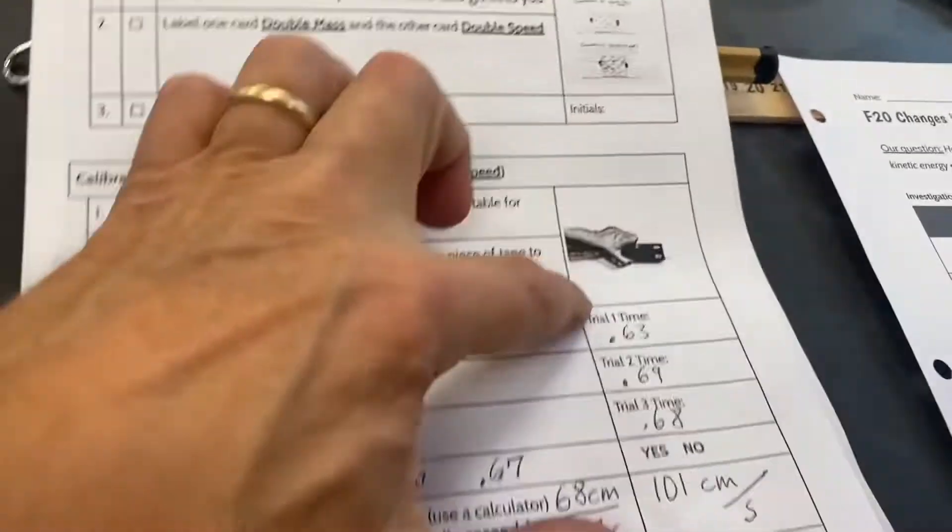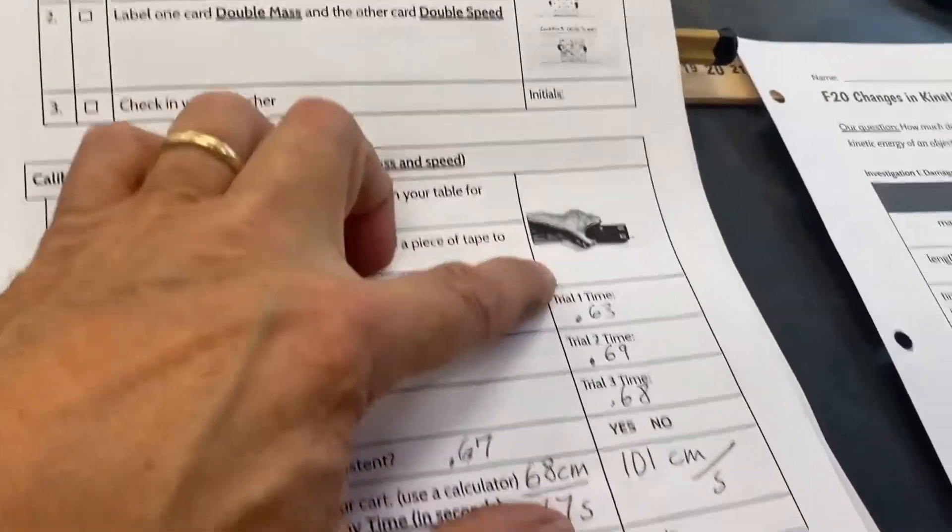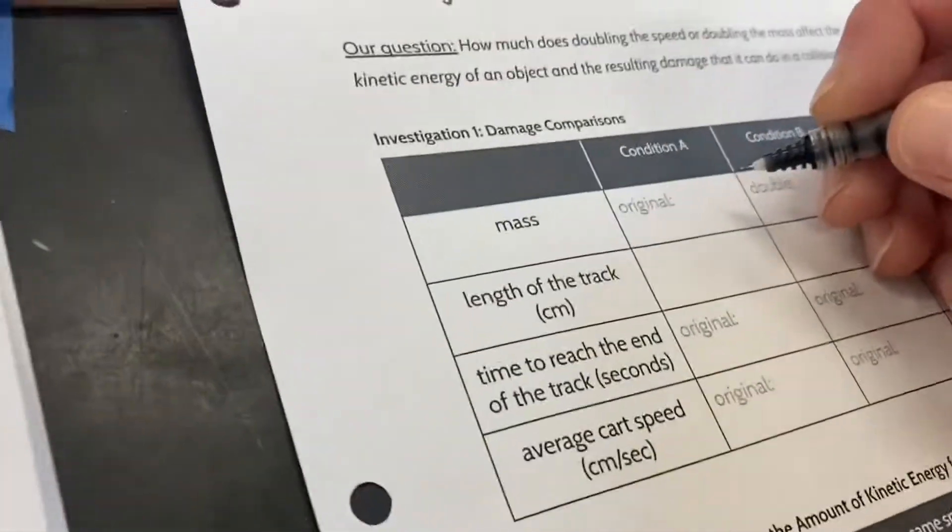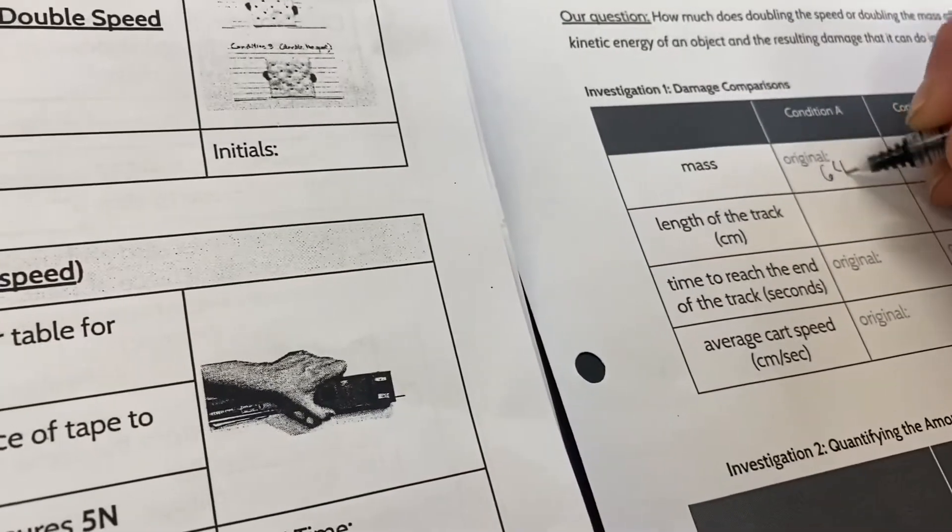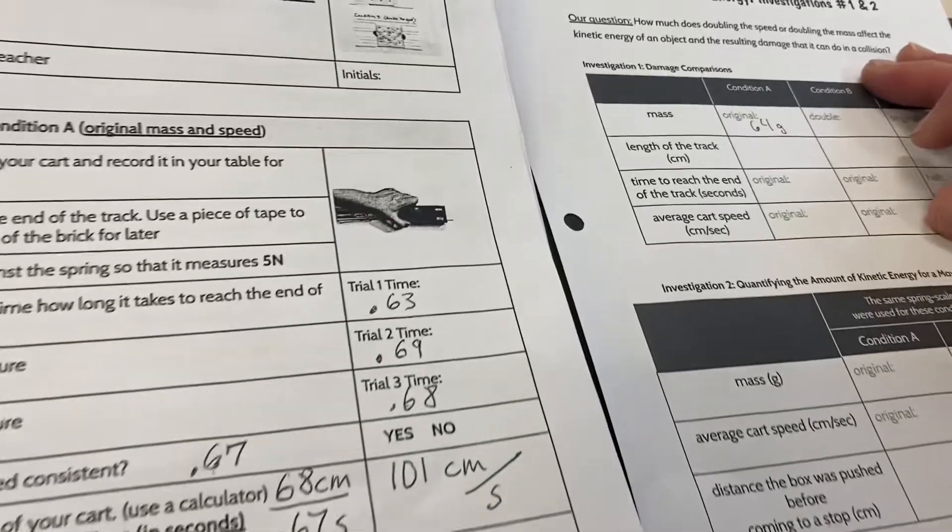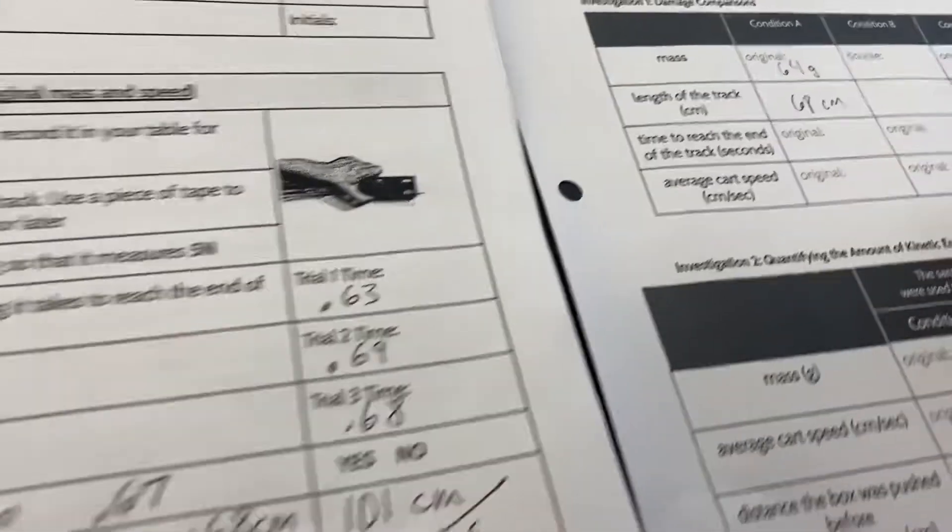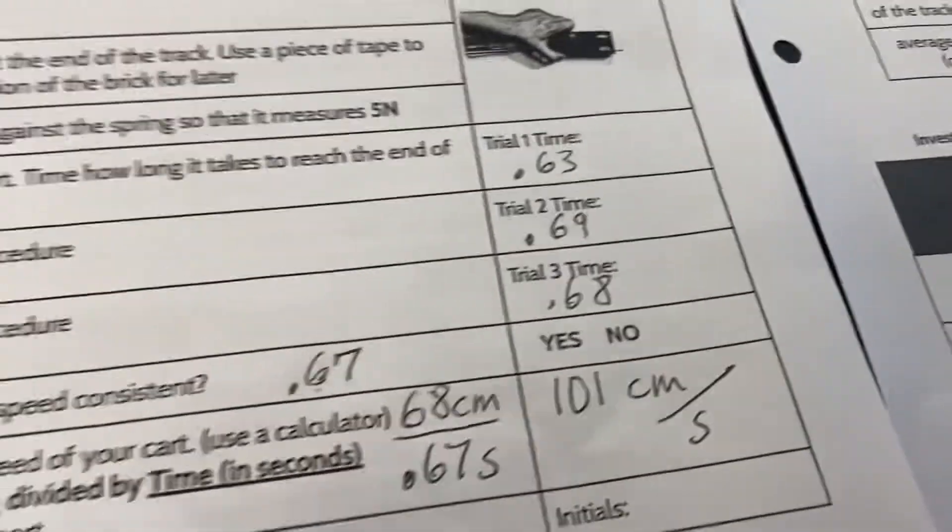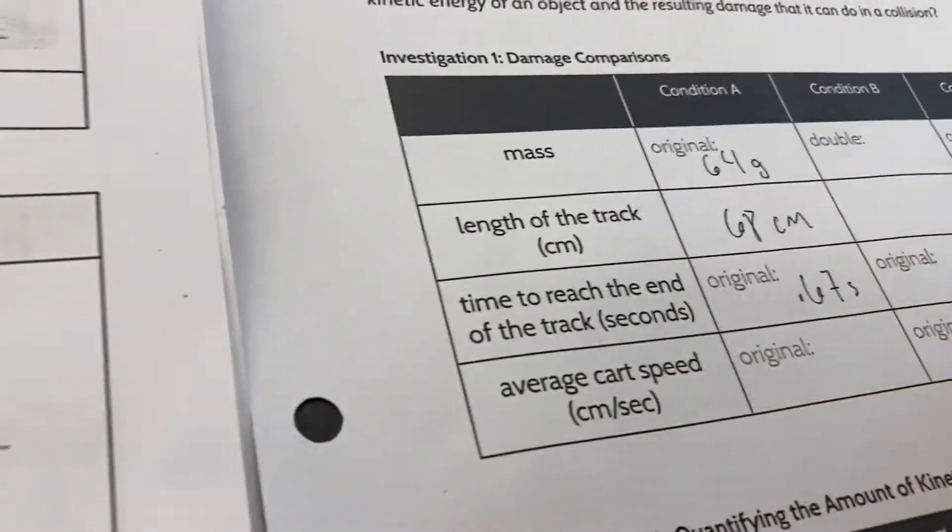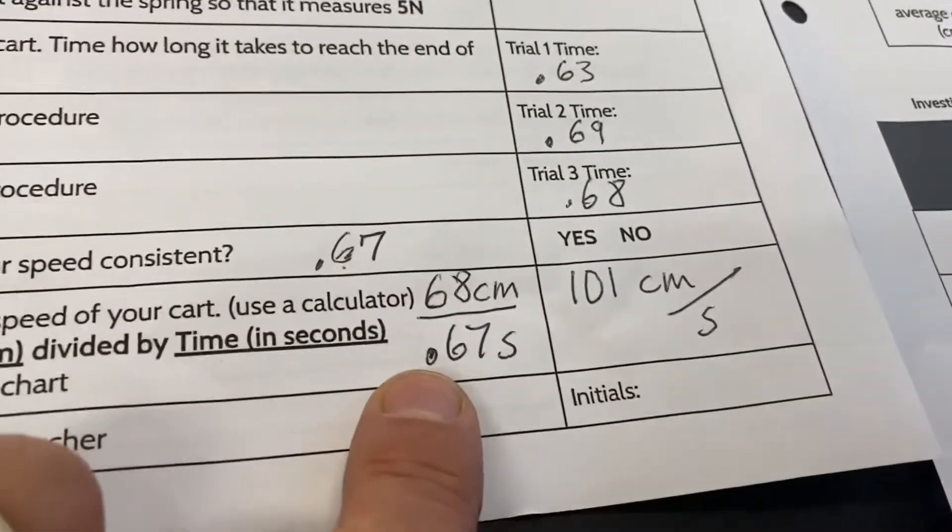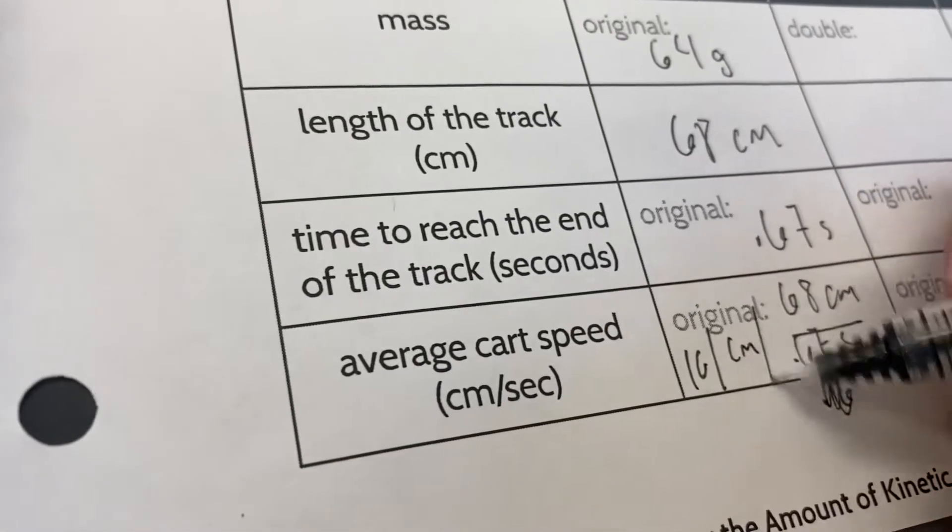All right we got our data here, we're going to now transfer it over to our data table. Mass of the car was 64 grams. 64 grams, length of the track 68 centimeters, and then time to reach the end we thought on average was something like 0.67 seconds. Nice use of units there. Nice. And then we did this little calculation. So we'll write down the speed of 101 centimeters per second here.